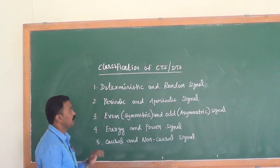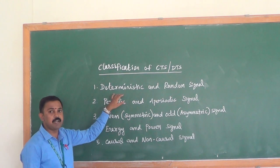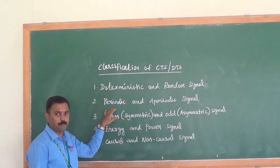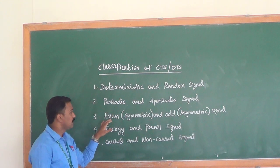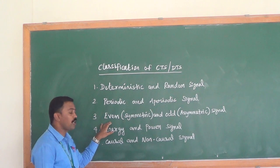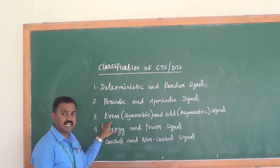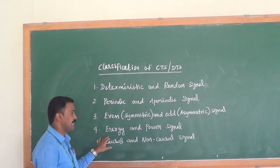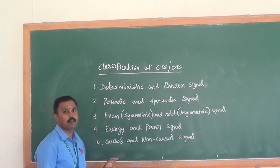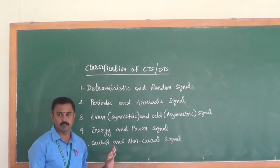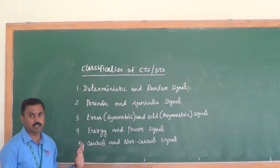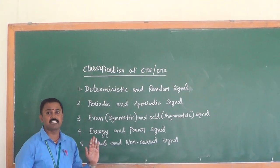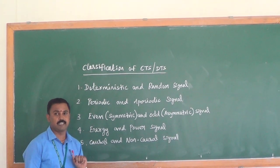Here are the five classifications: first, deterministic and random signal; second, periodic and aperiodic signal; third, even or symmetric and odd or asymmetric signal; fourth, energy and power signal; and the last one is causal and non-causal signal. These classifications apply to both continuous time and discrete type signals.